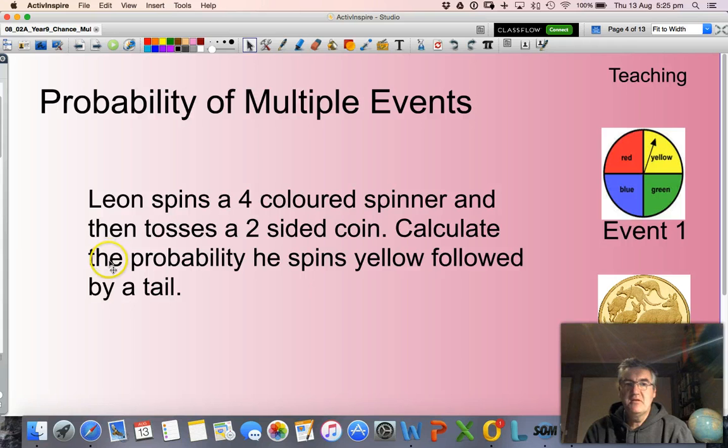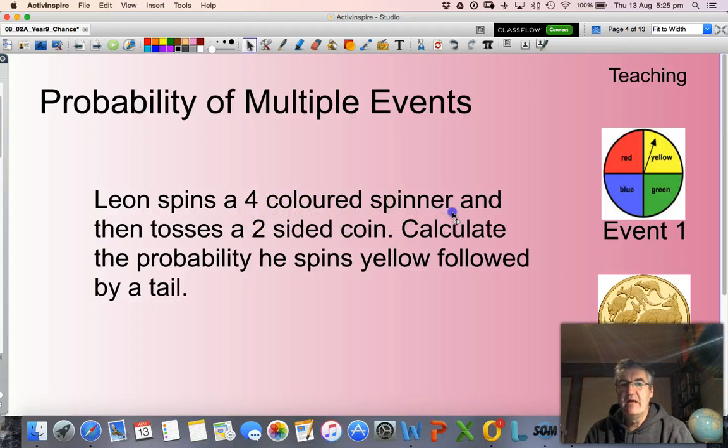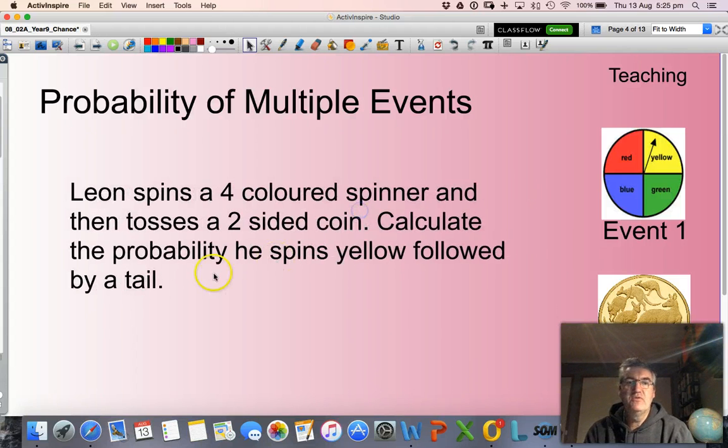Consider this problem. Leon spins a four-coloured spinner and then tosses a two-sided coin. Calculate the probability he spins yellow followed by a tail.